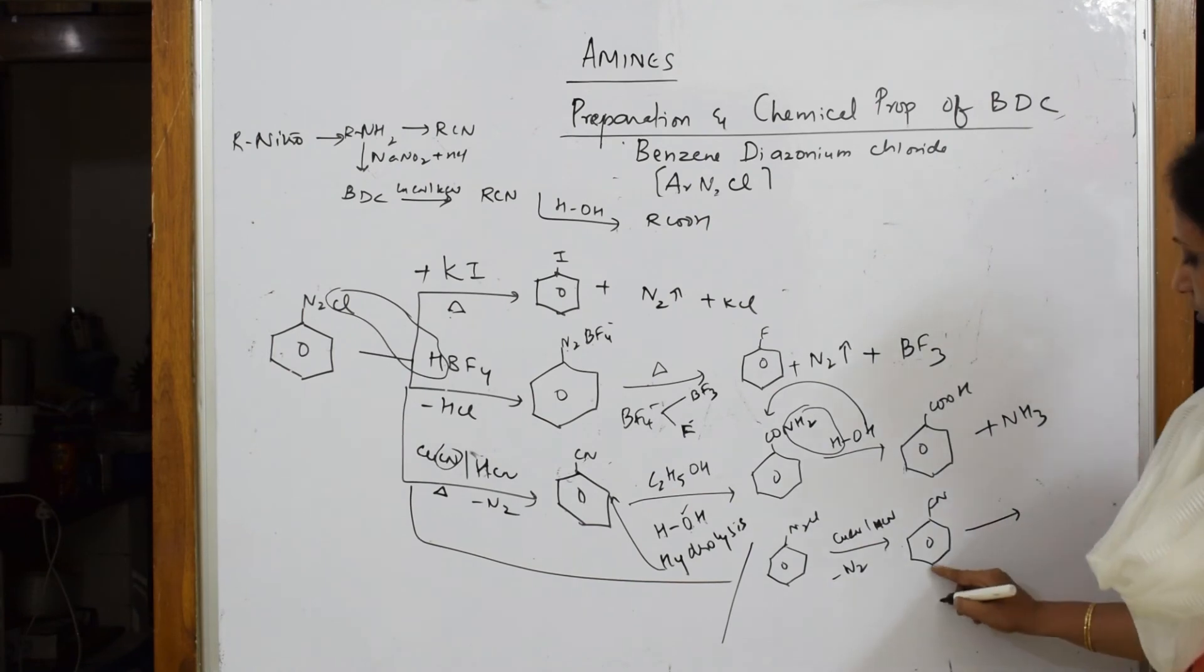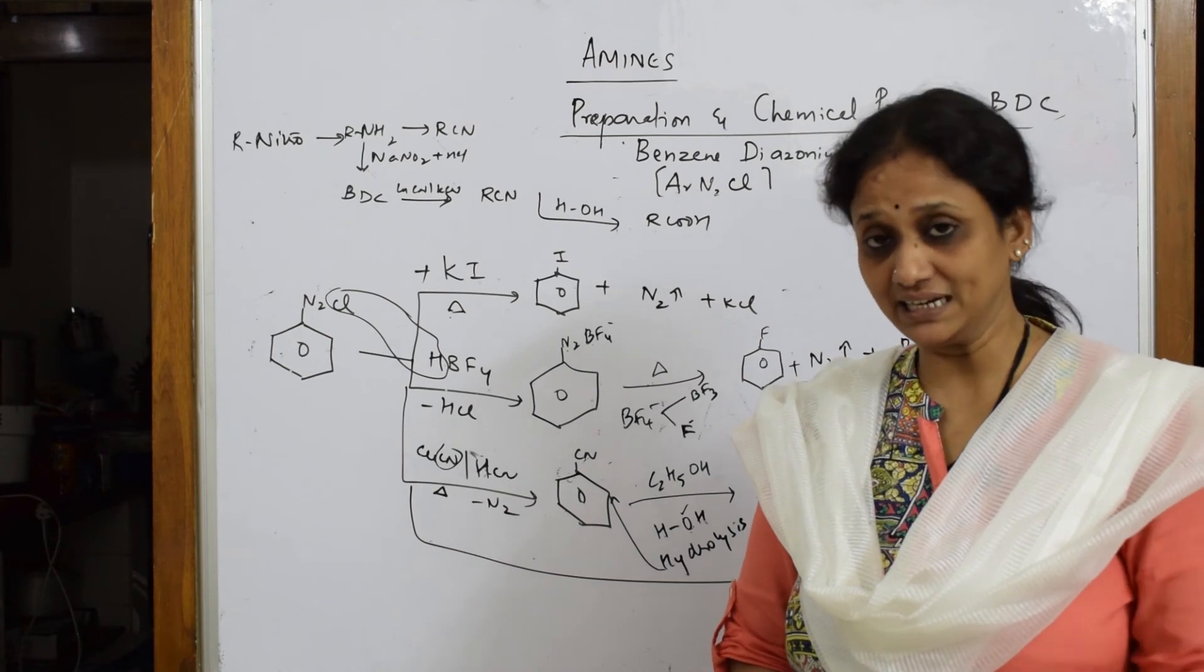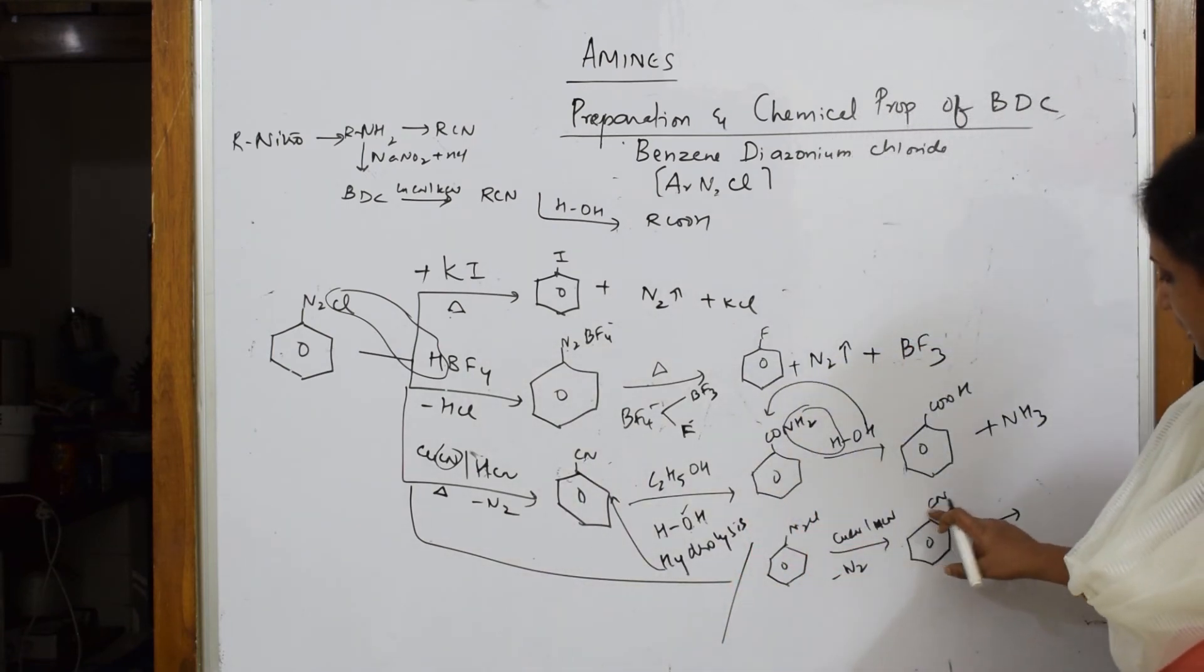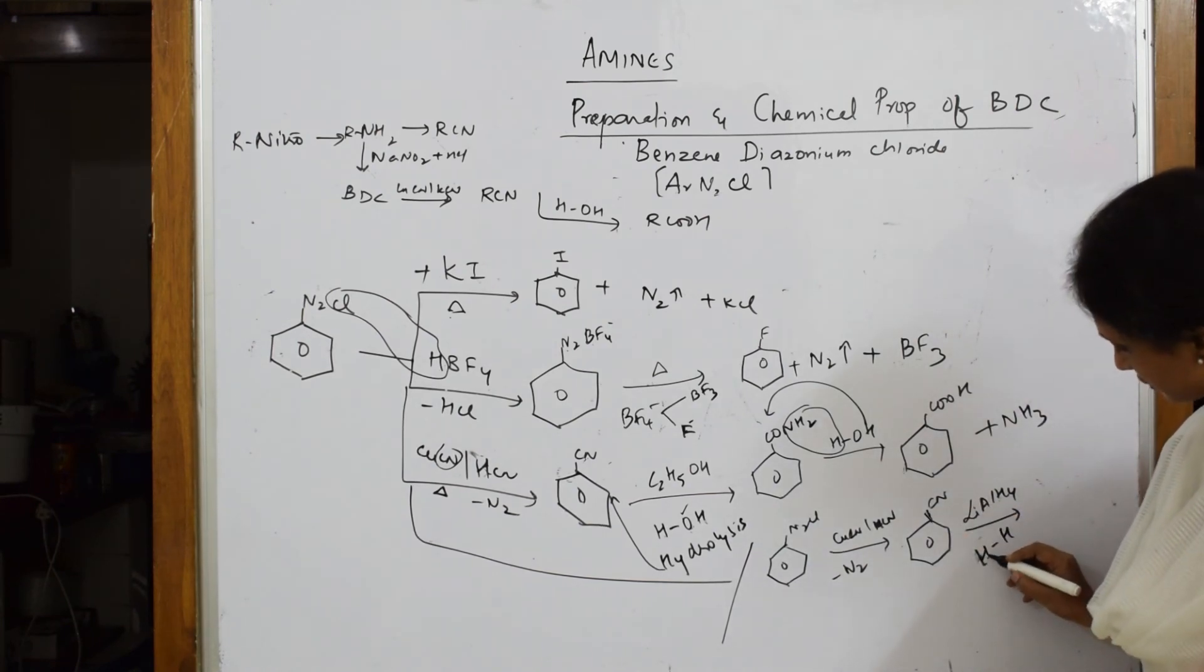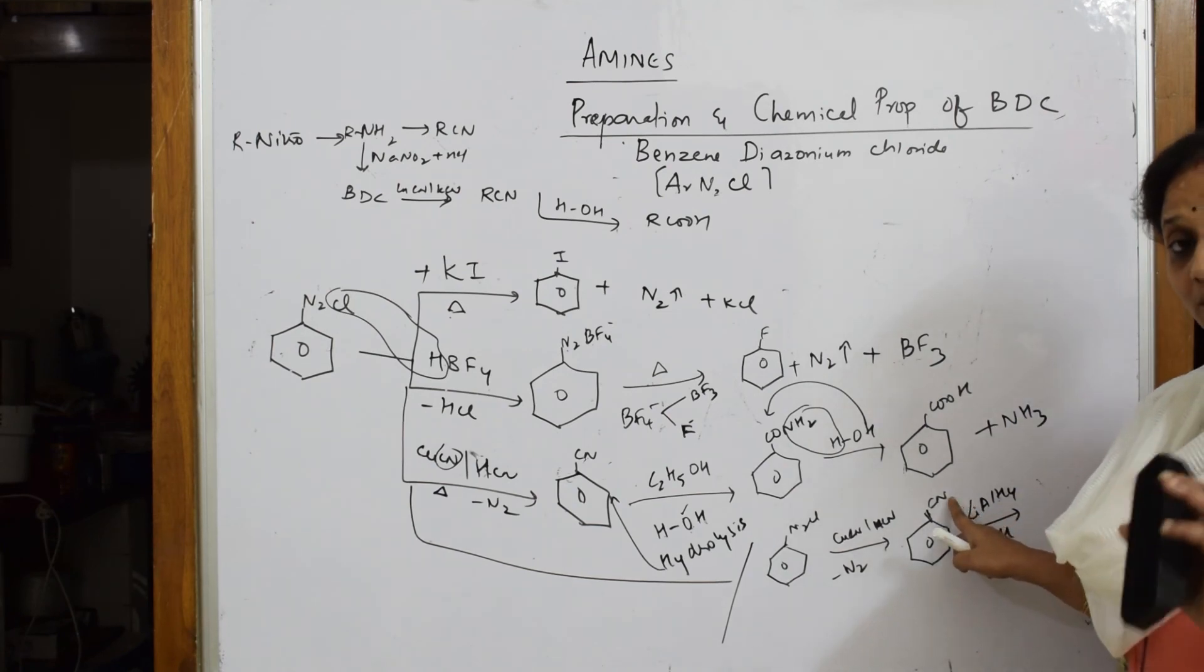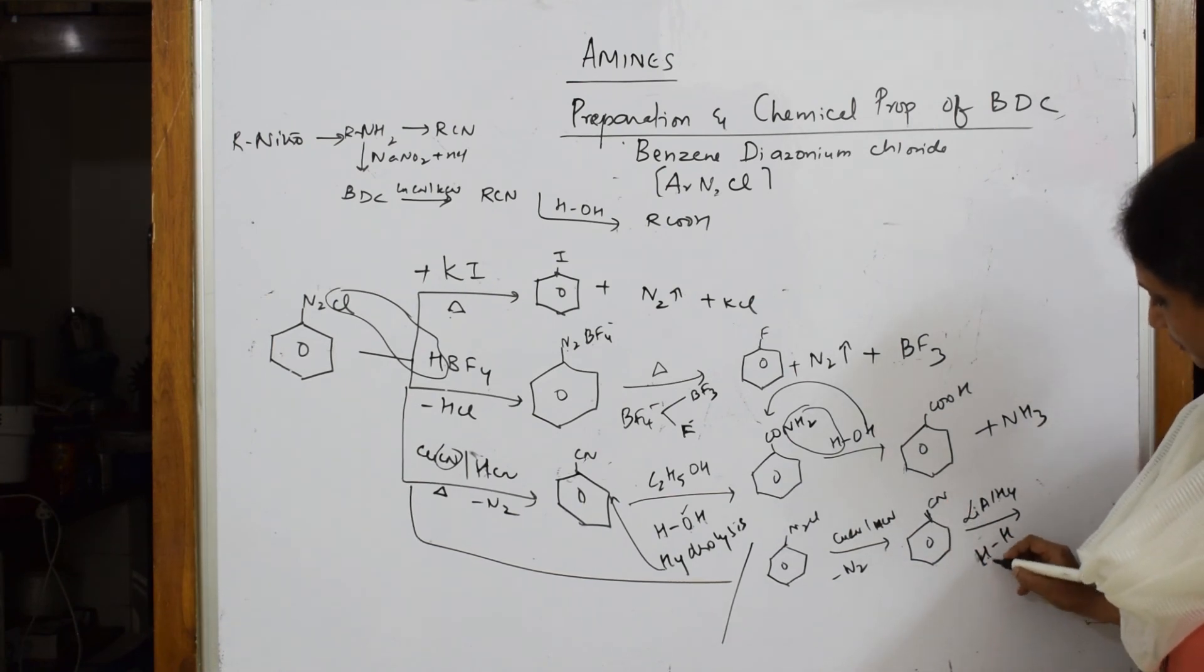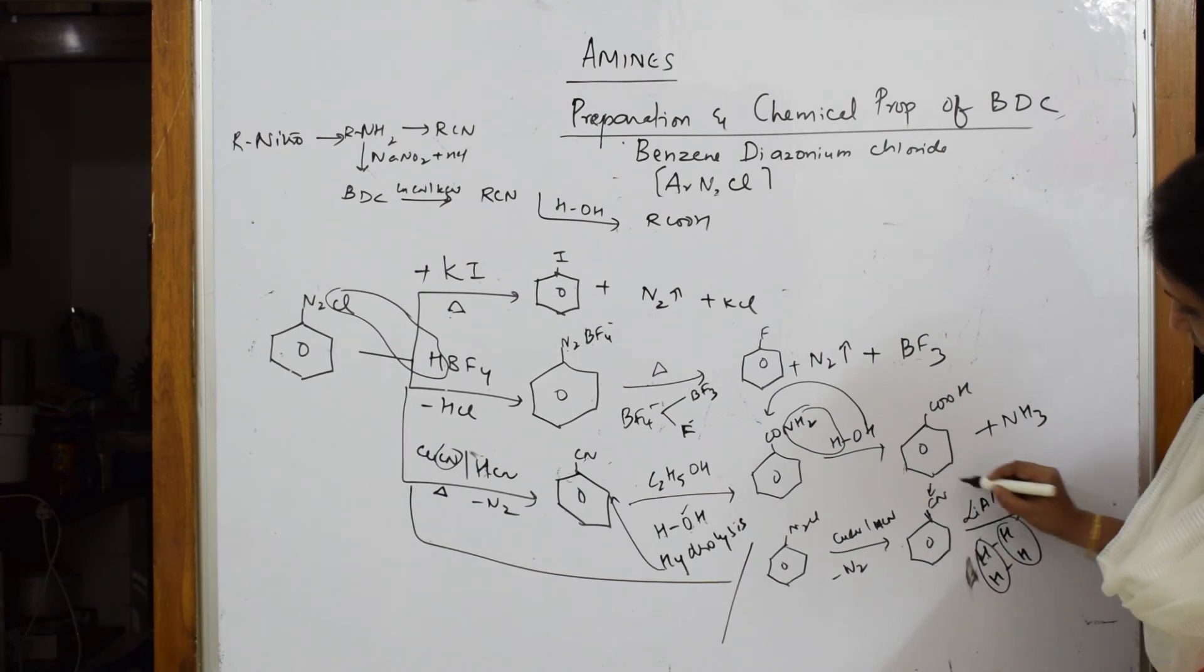Now to this cyano group I am going to introduce reducing agents. Reducing agents like Sn plus HCl, metal acid. You can use lithium aluminium hydride. This is a reducing agent which is going to add hydrogens across the cyano group. Let us see how many hydrogens. Here one hydrogen. Here one hydrogen. But I want benzyl amine. So I am going to add two hydrogens. Two hydrogens will add here. Two hydrogens will add here.